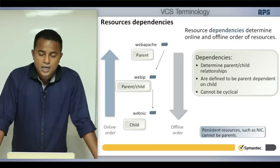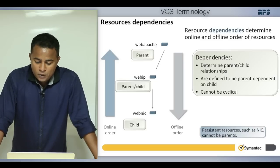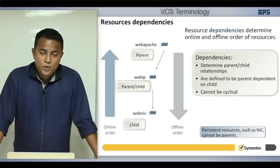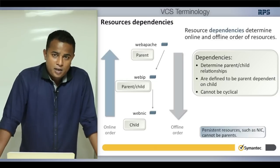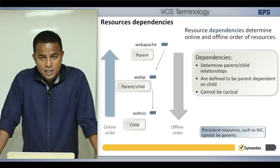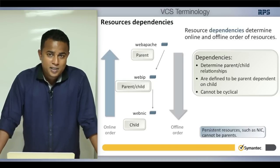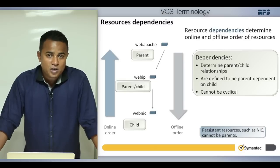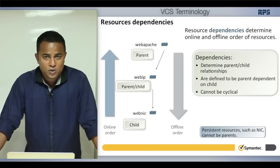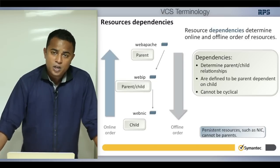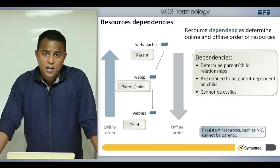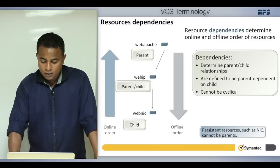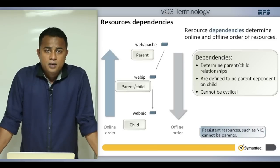Dependencies cannot be cyclical — you cannot have a loop. If A depends on B, and B depends on C, that's fine. But if C then depends on A, it becomes a loop and VCS wouldn't know what to start or stop first. Cyclic dependencies are not allowed; you must have a clearly defined parent and a clearly defined child.